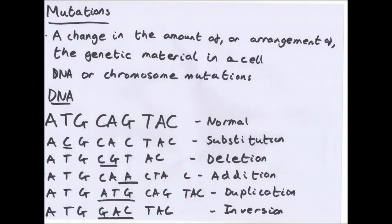So, mutations. A mutation is a change in the amount of, or arrangement of, the genetic material in a cell. There are two types of mutations. You have DNA mutation or chromosome mutation. Chromosome mutations involve changes to the structure of chromosomes and or to their number. DNA mutations are changes to the genes due to changes in the nucleotide base sequence. At this stage, we're only going to look at DNA mutations. In the next video, we'll look a little bit more at chromosome mutations.